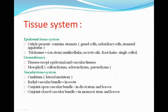One important point: the cuticle layer is not present on the roots. The cuticle is a waxy layer, and if it were present on the roots, water absorption from the soil would not be possible. For this reason, the cuticle layer is present only in the shoot system. If asked why cuticle is absent in the root system, explain that as a waxy layer it would prevent water from entering the roots.